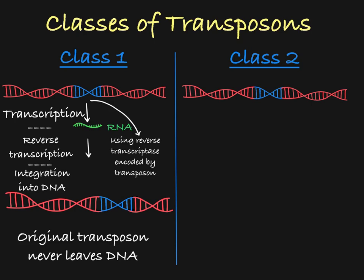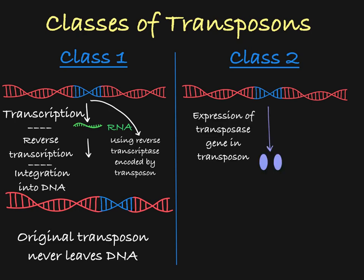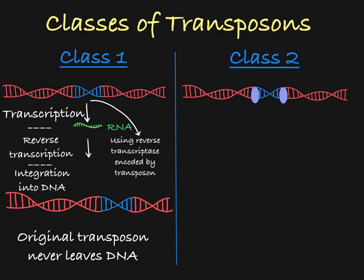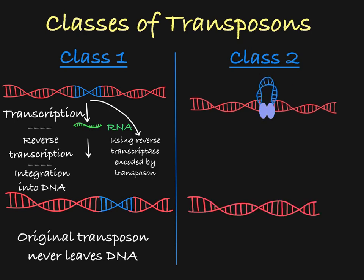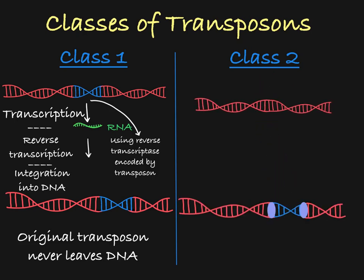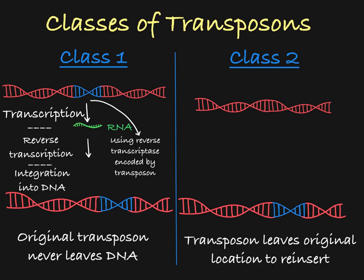Class II transposons are a little different. There is no RNA intermediate. Instead, the element remains in DNA form throughout the process of transposition. Class II transposons typically encode a multifunctional enzyme called transposase. Transposase recognizes the DNA sequences at the 3' and 5' ends of the transposon, and will cut the transposon out of the DNA and then reinsert it somewhere else in the DNA. This is called a cut-and-paste mechanism of transposition.